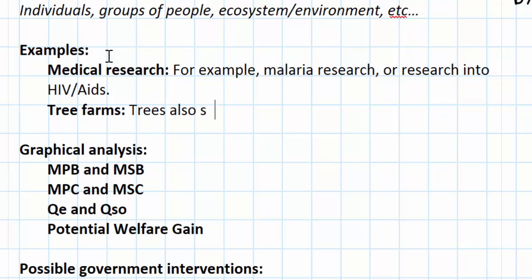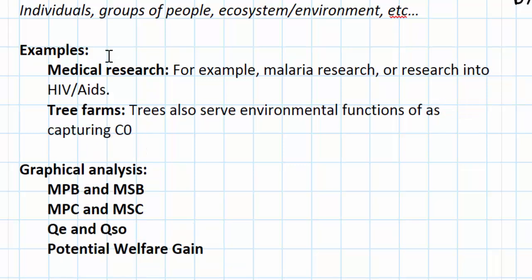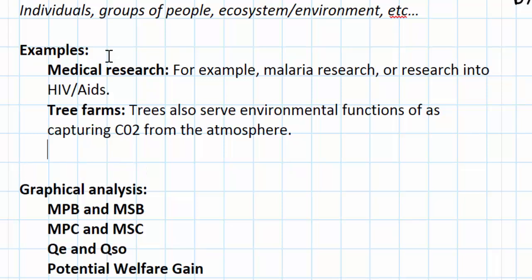Another example is tree farms. Trees are a product that can be harvested and sold; however, trees also serve environmental functions such as capturing CO2 — carbon dioxide — from the atmosphere. So when a private company plants a tree farm, it benefits not just the firm and the companies that buy the wood, but the environment as a whole, as there will be less carbon dioxide in the atmosphere as a result.